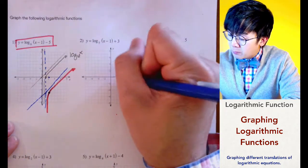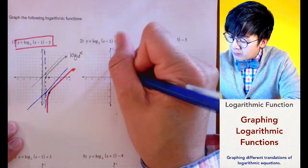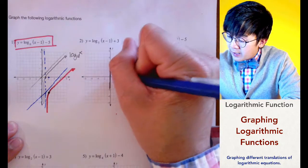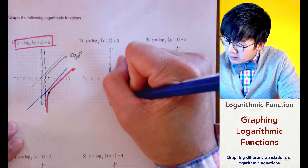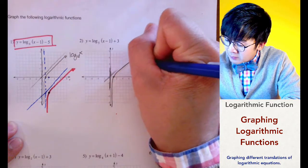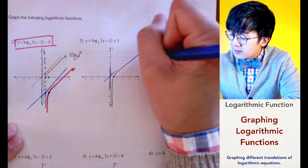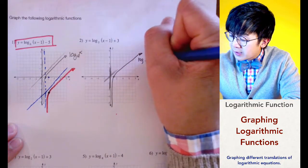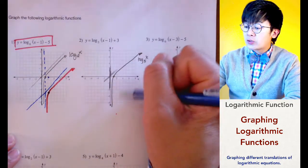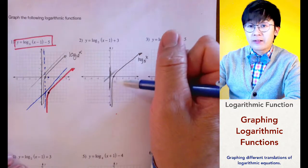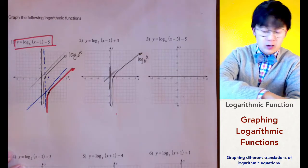For problem number 2, we will graph our basic log of x. This is our point of inflection, the vertical asymptote, and the slant asymptote — the asymptote we cannot cross, and the slant asymptote that guides the shape of our logarithmic graph. This is now our log of x base 5. Notice that the base does not change the behavior of the graph that much, but the constants will affect the graph.